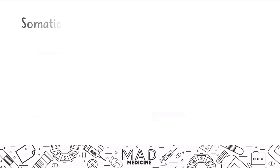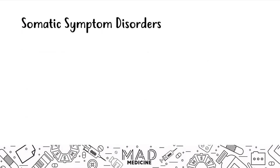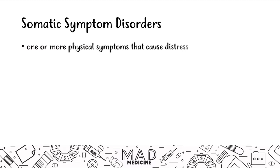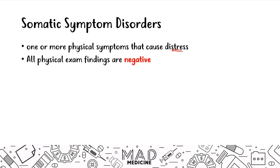Let's first start talking about somatic symptom disorder, probably the most important one you need to know out of all four. In this disorder, one or more physical symptoms are present that cause significant distress in a patient's life. When it comes to the physical exam, everything is going to be negative. So you have a patient who presents with pain, maybe nausea or vomiting — constant recurring physical symptoms — but when you do the exam, nothing really adds up. At that point, if there's a history of recurrent symptoms without any cause, you can start thinking about somatic symptom disorder.